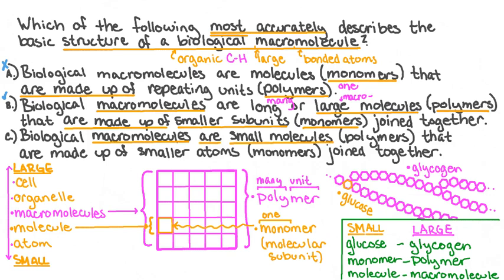Our last choice states that macromolecules are small molecules. But we know that the word part macro actually means large. So this answer choice is also not correct. The choice that best describes the basic structure of a biological macromolecule is because biological macromolecules are long or large molecules or polymers that are made up of smaller subunits or monomers joined together.